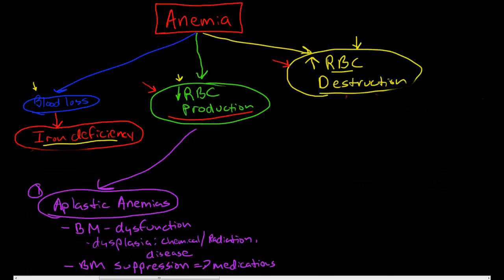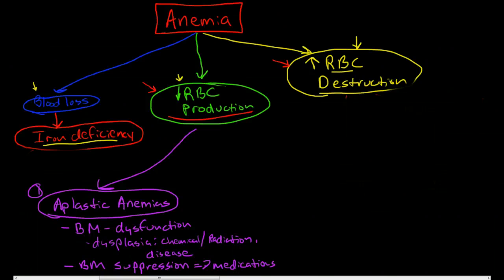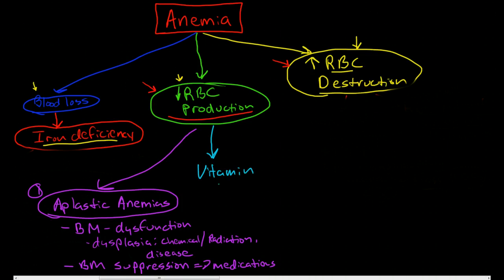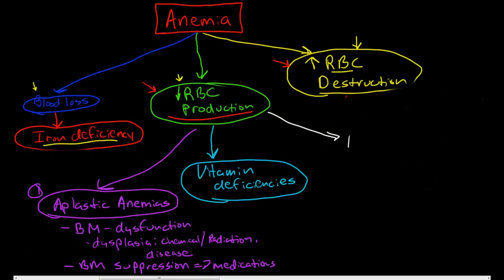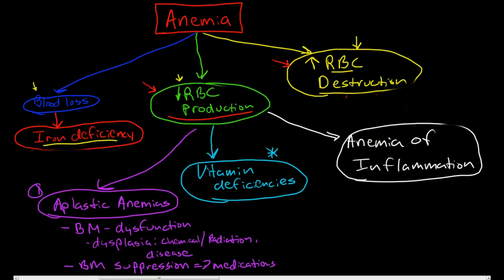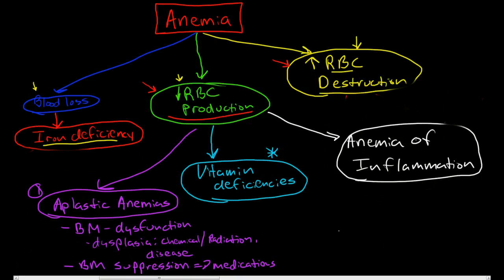The next types of anemias caused by decreased red blood cell production are anemias caused by vitamin deficiencies. I also want to introduce the last category of decreased red blood cell production: anemia of inflammation, which I will cover in my next video. For the remainder of this video, I'm going to focus on the vitamin deficiency anemias.